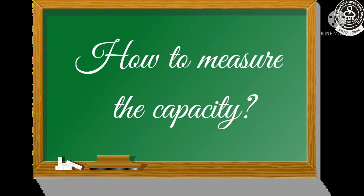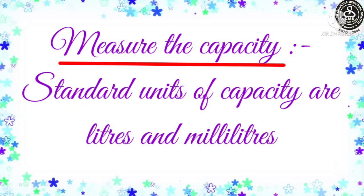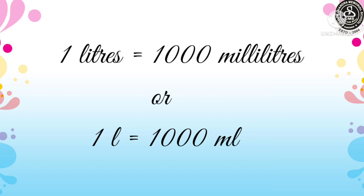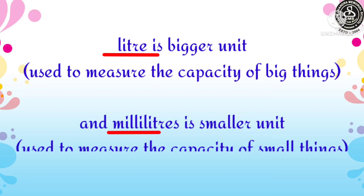Now children, can you tell me how to measure the capacity of anything? To measure the capacity of anything, we need standard units of capacity, and those are litres and millilitres. One litre is equal to 1000 millilitres, and we can write the same using short form. Litre is the bigger unit used to measure the capacity of big things, and millilitre is the smaller unit used to measure the capacity of small things.